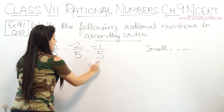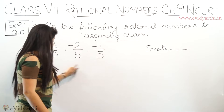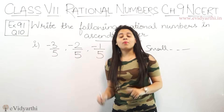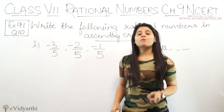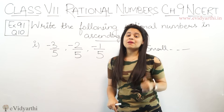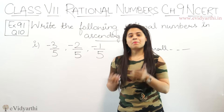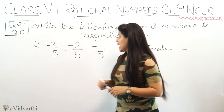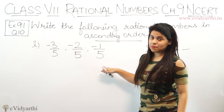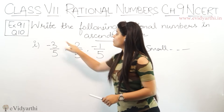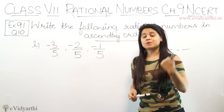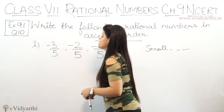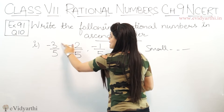Over here आप देख सकते हैं, यहां पे जो upon 5 है, तीनों में denominator same है. अगर denominator same नहीं होता, तो हम पहले denominator same बनाते हैं, ताकि पता चले कौन सा number बड़ा है, कौन सा छोटा है. So यहां पे तीनों के same हैं, so हमें सिर्फ ऊपर judge करना है — सबसे छोटा कौन सा है, उससे बड़ा कौन सा है. As you can see the numbers are 3, 2, 1.